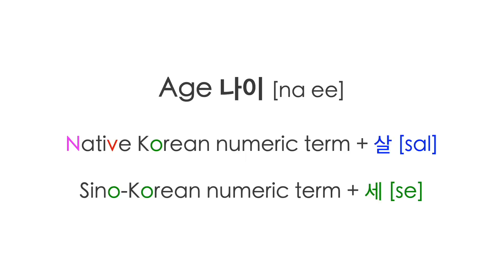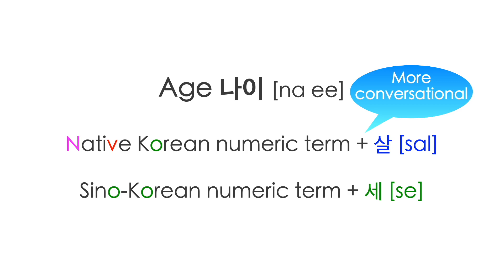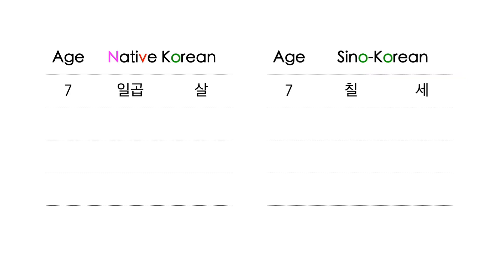To say someone's age in Korean, 살 or 세 is added to the number. They both mean age. The only difference is 살 is a native Korean word and 세 is a Sino-Korean word. Native Korean numeric terms are more conversational. Age of seven is 일곱 살 in native Korean and 칠 세 in Sino-Korean.